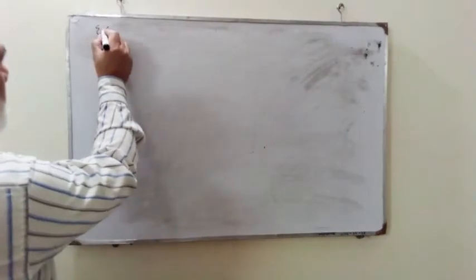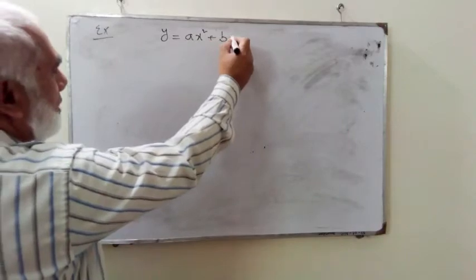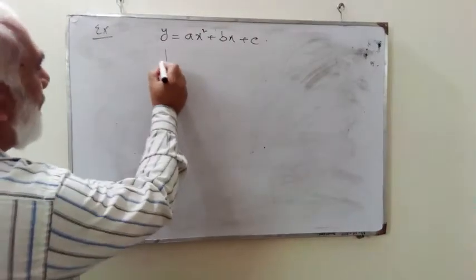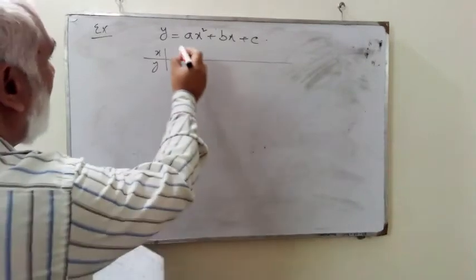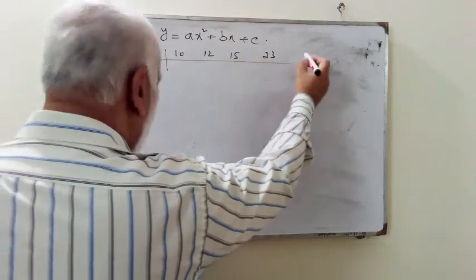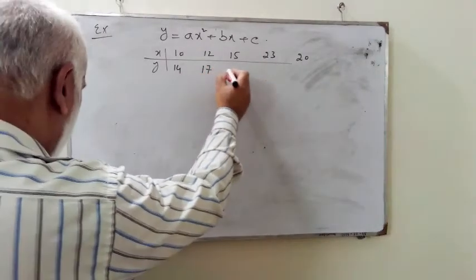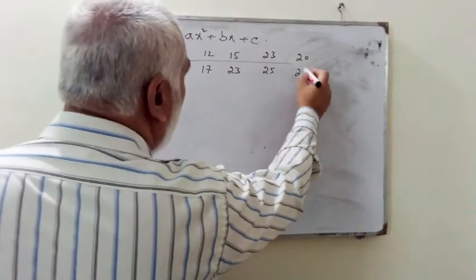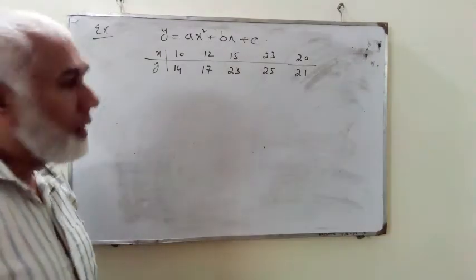Now we are writing the statement of the question. You are provided a curve y equals ax² plus bx plus c—this is the same parabolic curve—and the set of points you have to use for this particular case are, of course, in the form of x and y: 10, 12, 15, 23, 23, and 20.